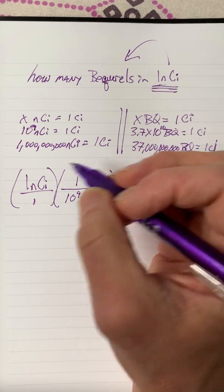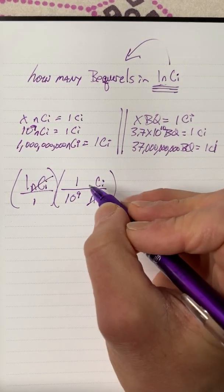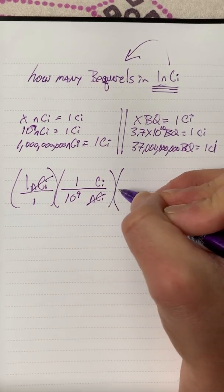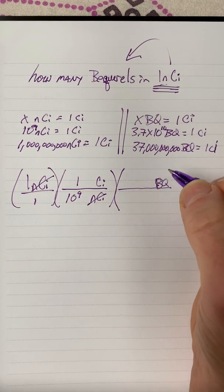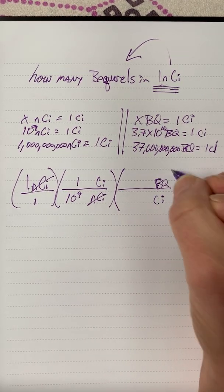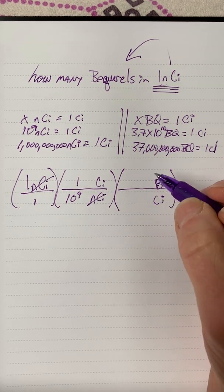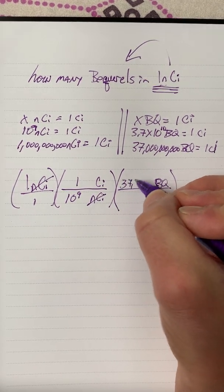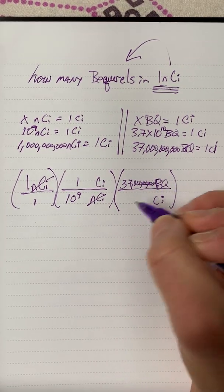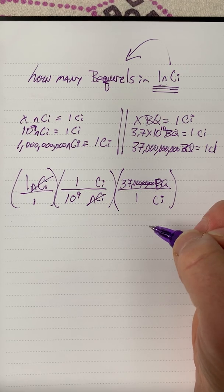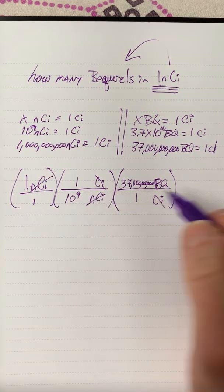So: one curie equals 10 to the 9th nanocuries. That lets us drop out the nanocuries, leaving us in curies. But we want becquerels, so we need to cancel curies too — we put curies in the denominator using the next conversion factor: 37 billion becquerels per one curie.